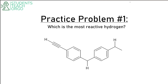Practice problem: which is the most reactive hydrogen? We have three hydrogens to work with. We have this alkenyl hydrogen, we have this benzylic hydrogen, and we have this benzylic hydrogen — and there are two of those.